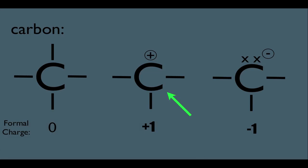And while we're looking at this, let's remind ourselves: when carbon has a negative charge, it also has three bonds, but it has a lone pair of electrons as well.